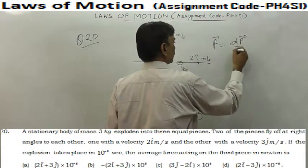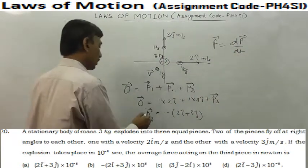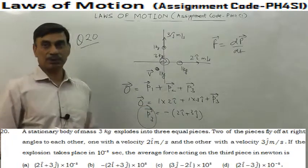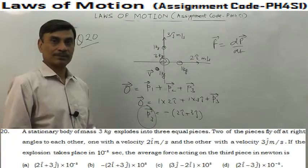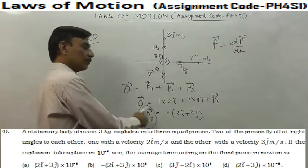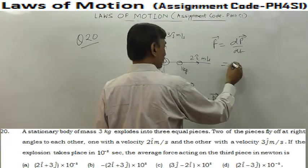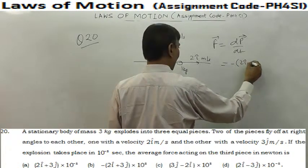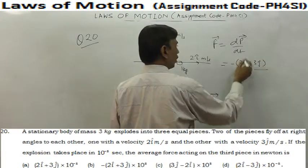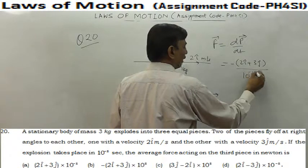Now F is dp by dt. For the third piece, the change of momentum - initially momentum was 0, finally it became p3 momentum. So change of momentum is p3 minus 0, equals p3. So change of momentum became minus 2i plus 3j cap, and time taken is 10 to power minus 5 seconds.